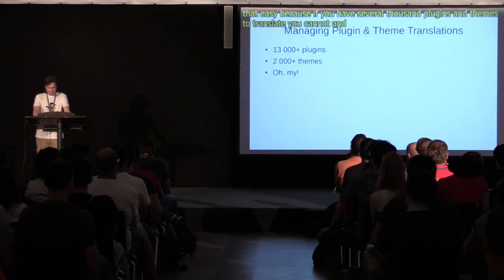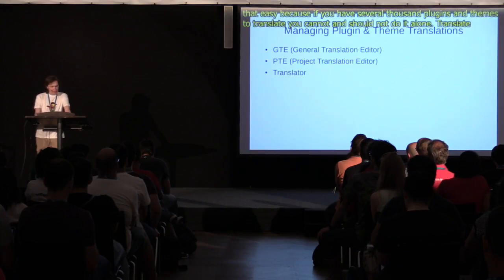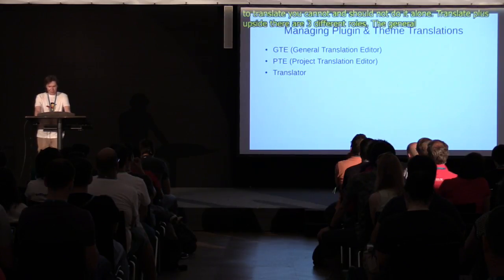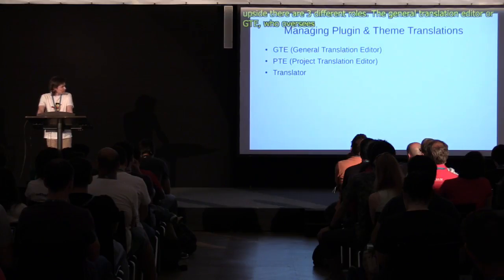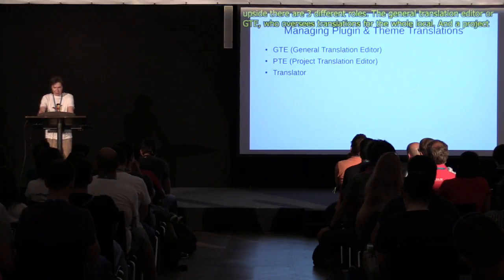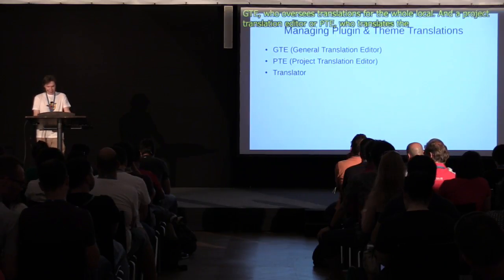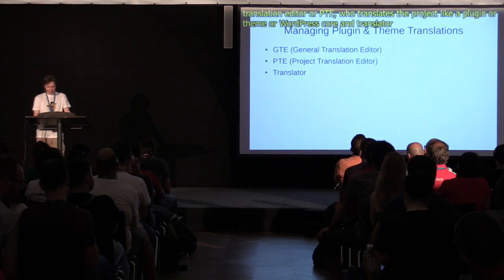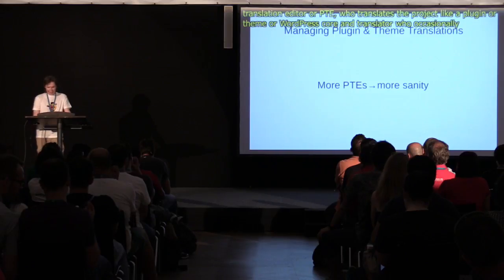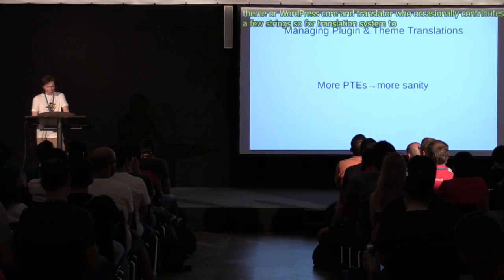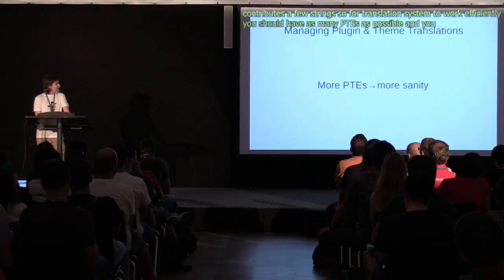It sounds like it's now easy to translate plugins in teams and everything's great. Well, it's not that simple, because if you have several thousand plugins and themes to translate, you cannot and should not do it alone. On the translate.wordpress.org site, there are three different roles: the General Translation Editor, or GTE, who oversees translations for the whole locale; the Project Translation Editor, or PTE, who translates a particular project like a plugin, a theme, or WordPress core; and a translator, who occasionally contributes a few strings. In order for the translation system to work efficiently, you should have as many PTEs as possible, and you also have to make sure they have read and understood the style guidelines for your language.